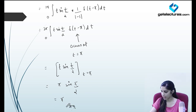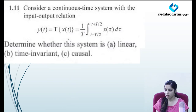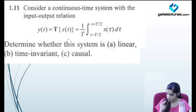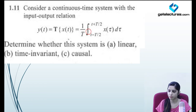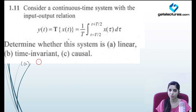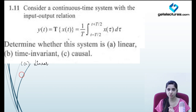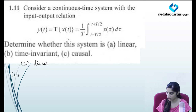Now look at the next question. They've given a continuous time system with a certain input-output relation and are asking you to determine whether the system is linear, time invariant, and causal.